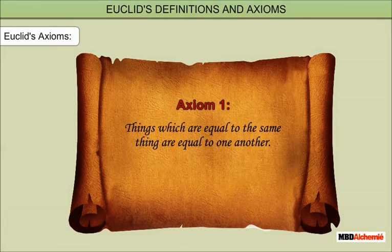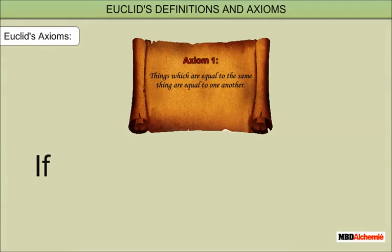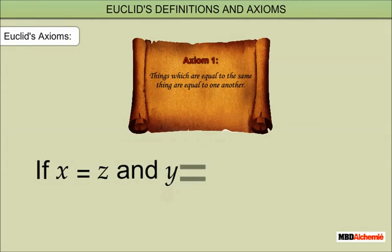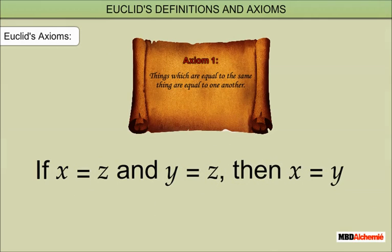Axiom 1: Things which are equal to the same thing are equal to one another. That is, if x is equal to z and y is equal to z, then x is equal to y. Example: if a is equal to 7 and b is equal to 7, then a is equal to b.